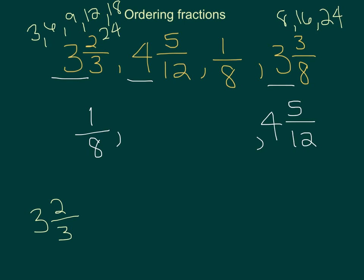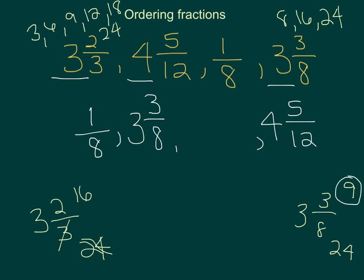So if I turn 3 and 2 thirds with a denominator of 24, then I get a numerator of 16. If I turn 3 and 3 eighths into a denominator of 24, I get a numerator of 9. So we go back to the original number, and we see that 3 and 3 eighths, because the numerator would be a 9 when they have a common denominator, is smaller than 3 and 2 thirds.